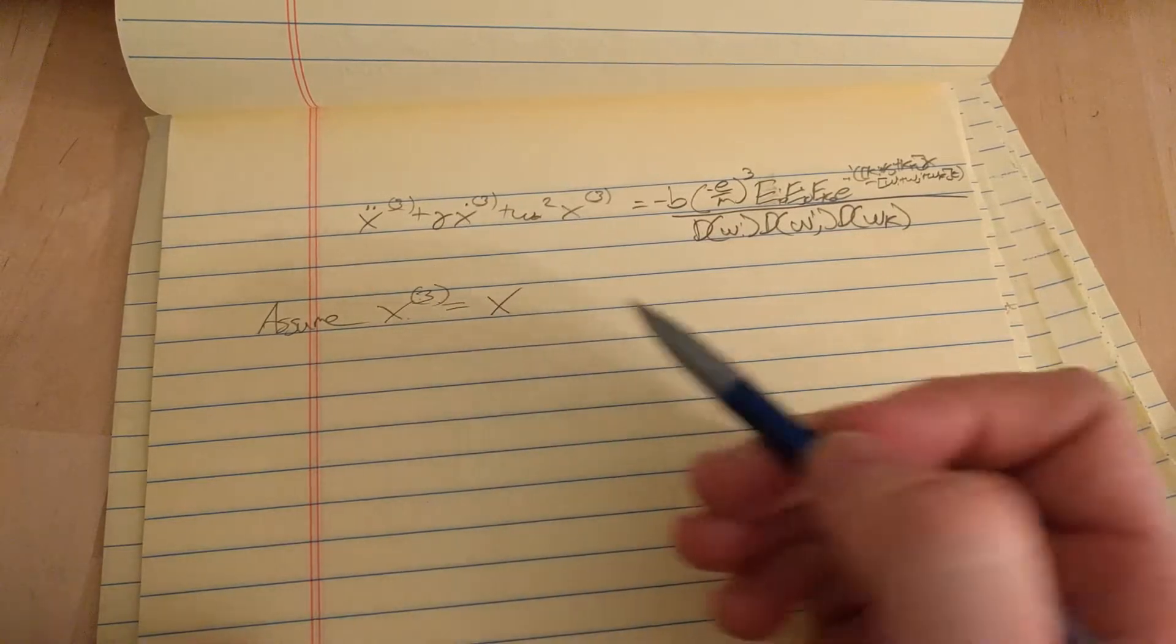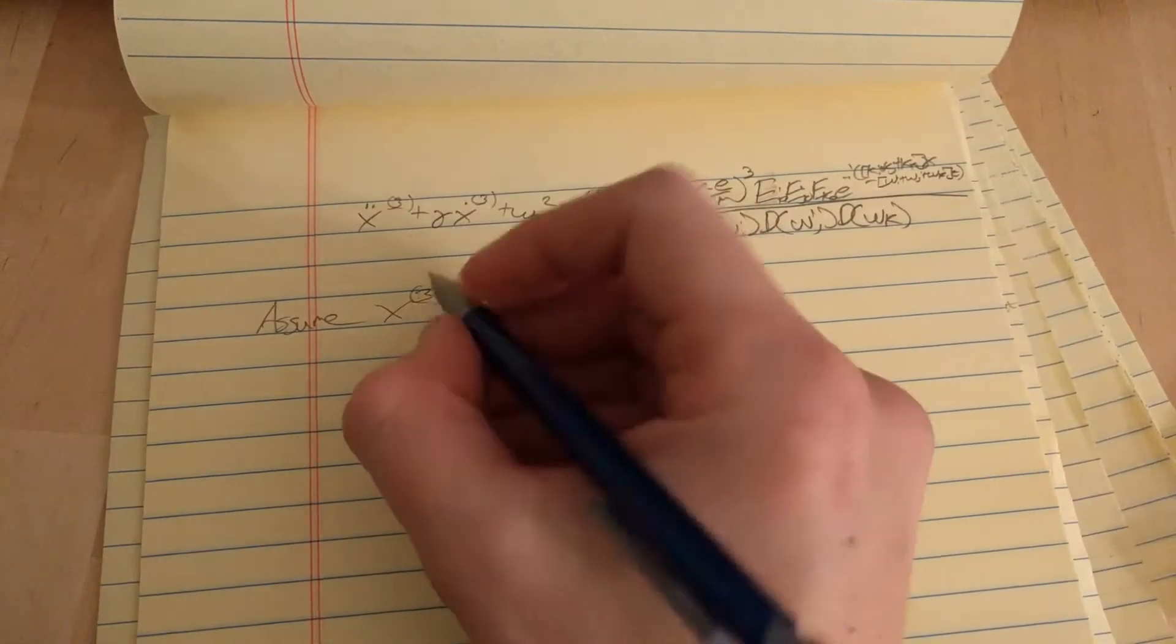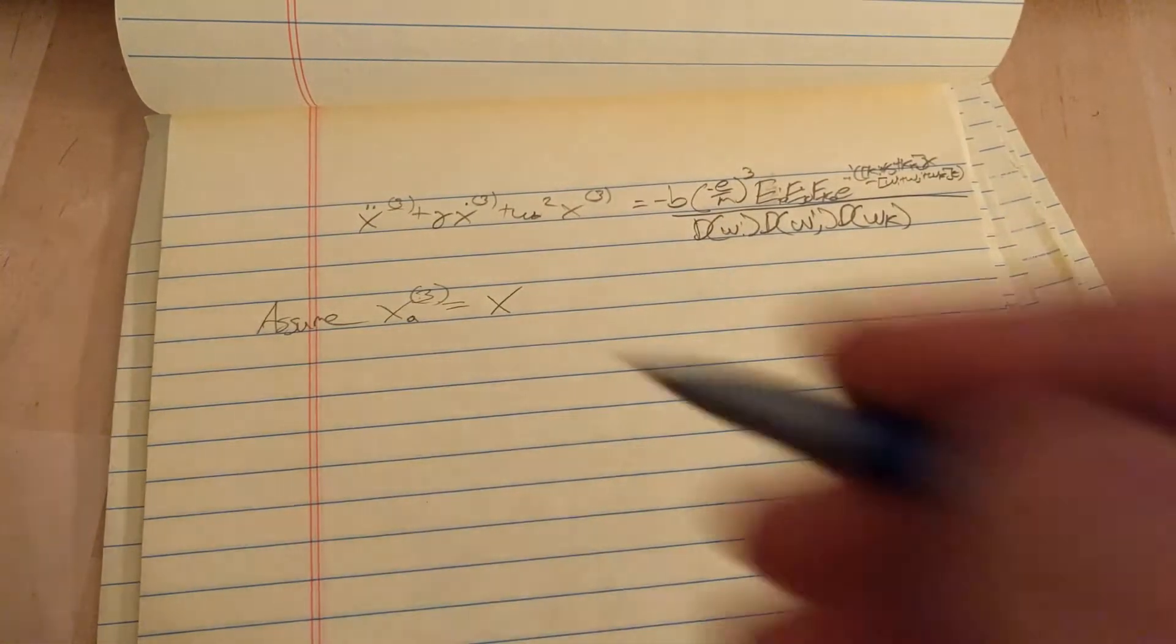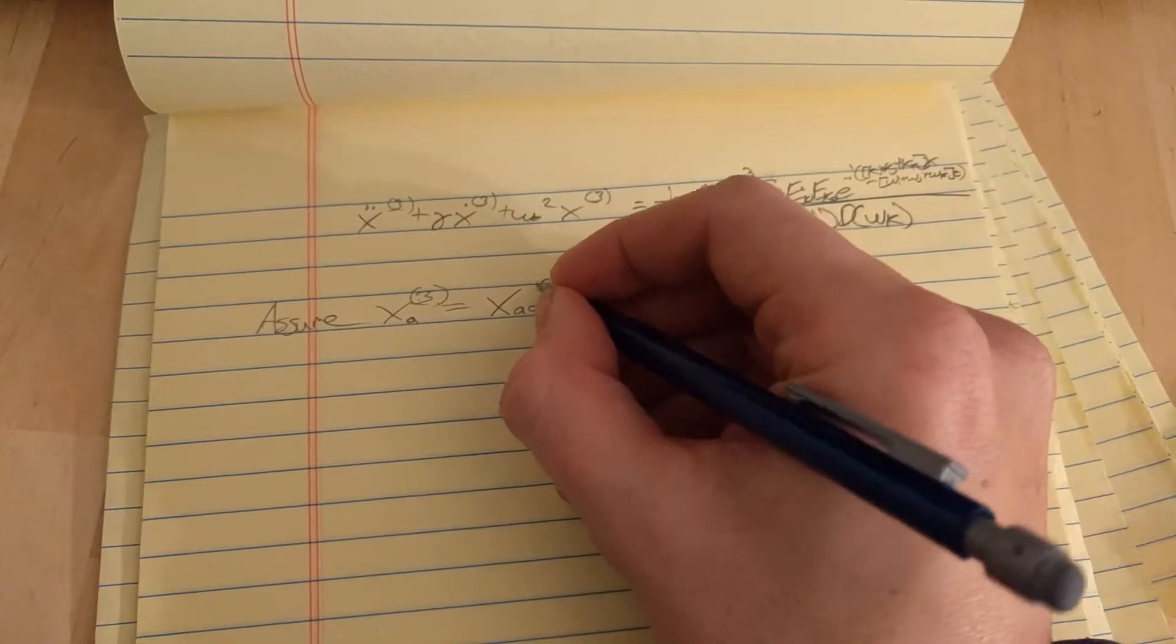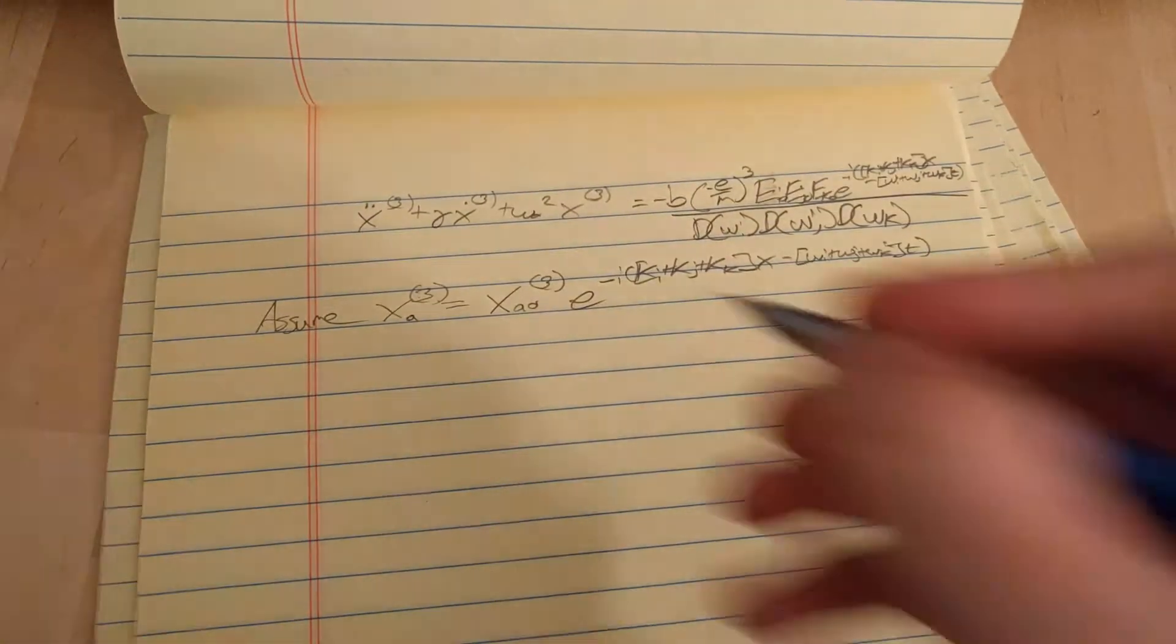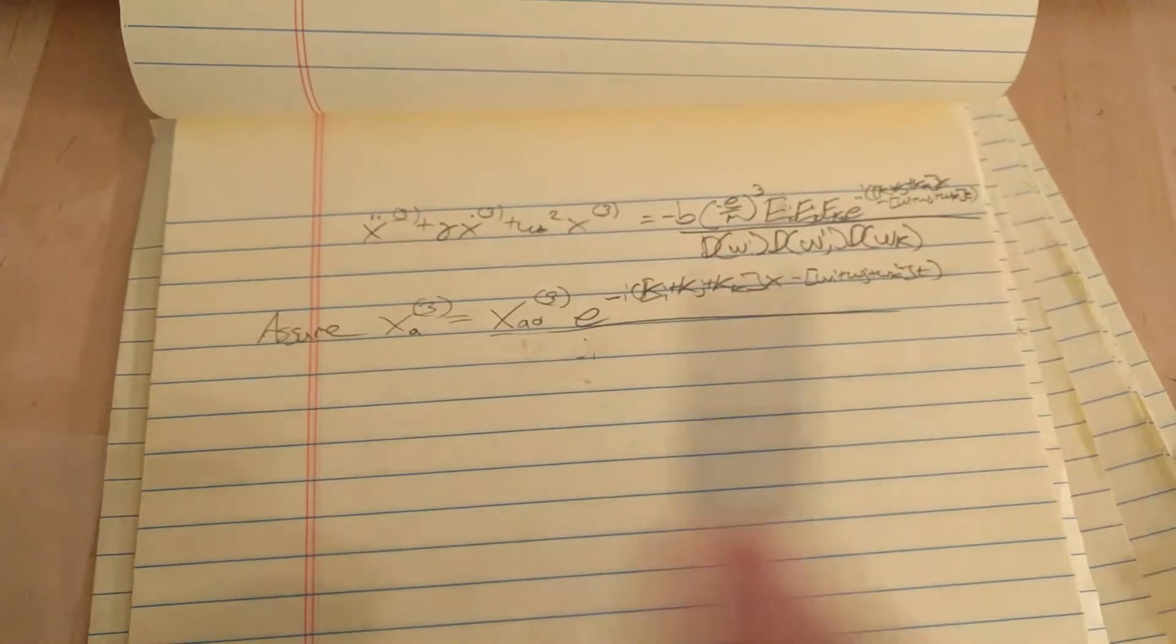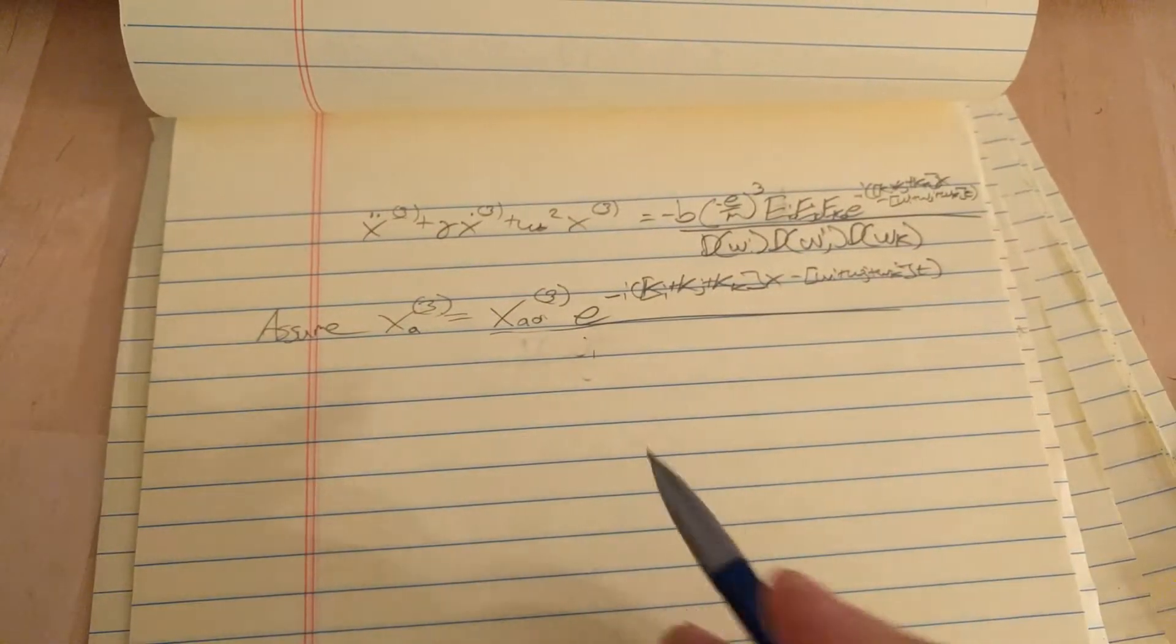And since x3 is going to have a bunch of different components, 216 like we said, I'm just going to call this the ath component, the letter a. Okay, sorry. There's no denominator. That's what we're assuming. Okay, so we'll find the first and second derivative of this.